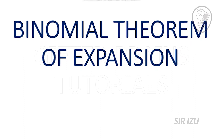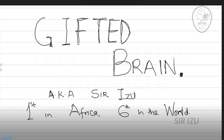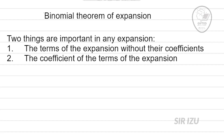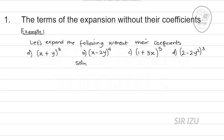Good day everyone. Today we shall be considering the binomial theorem of expansion. This is Gifted Brain, aka Saizu, first in Africa, first in the world. Two things are important in any expansion: the first is the terms of the expansion without their coefficients, and the second is the coefficients of the terms. I would like to talk about the first before the second — which is the term of the expansion without coefficients.